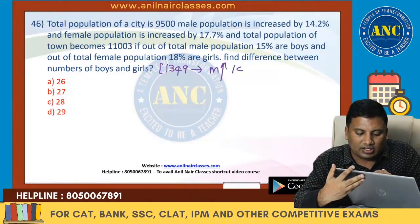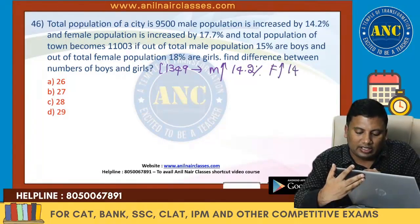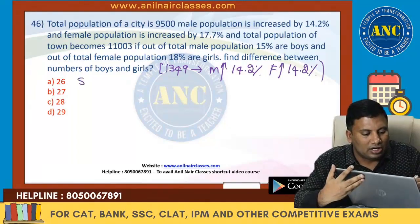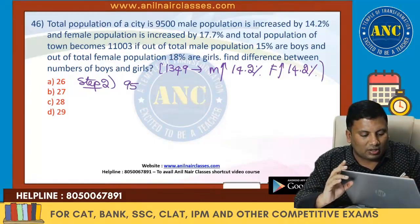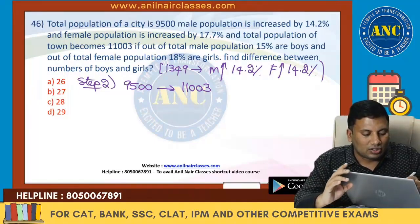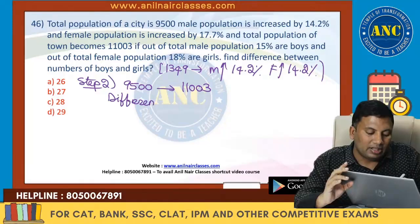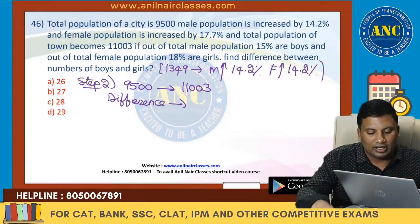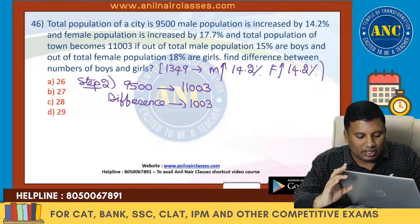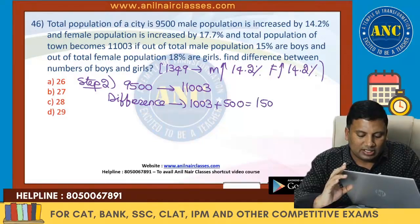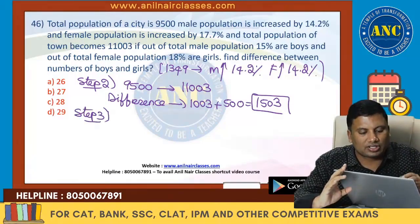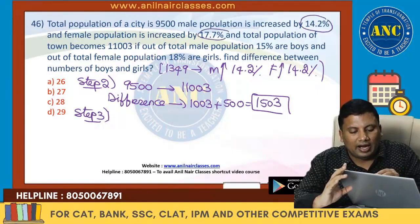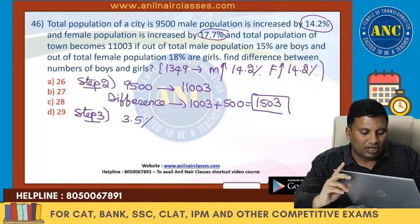Step number 2. Actually in the question, the population is 9,500 and it became 11,003. So the difference is: 9,500 plus 500 is 10,000, and 1003 plus 500 is 1503. So the actual increase is 1503. But our calculated increase was 1349 — it actually became 1503. The extra 154 comes from the difference between 14.2% and 17.7%, which is nothing but 3.5% of female population.